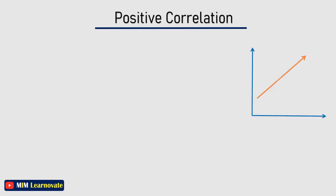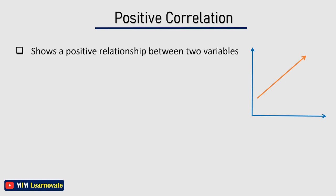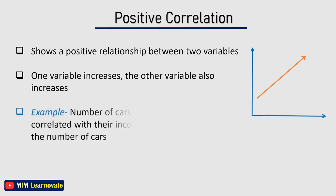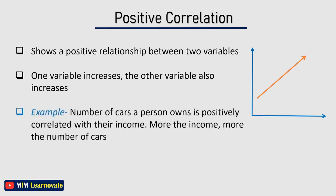A positive correlation shows that there is a positive relationship between two variables. In this kind of correlation, as one variable increases, the other variable also increases. For example, the number of cars a person owns is positively correlated with their income — more the income, more the number of cars.